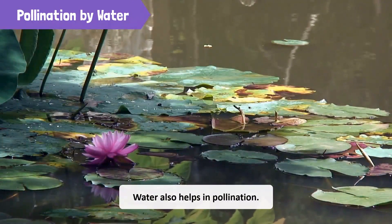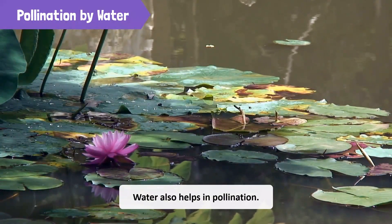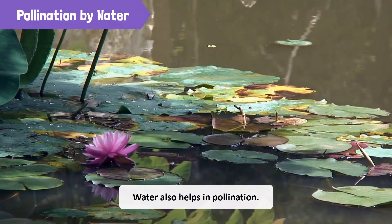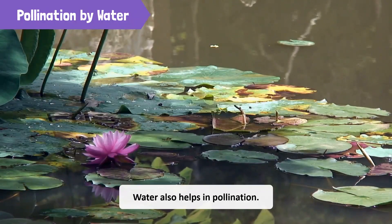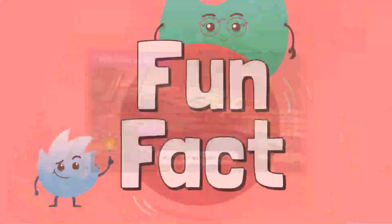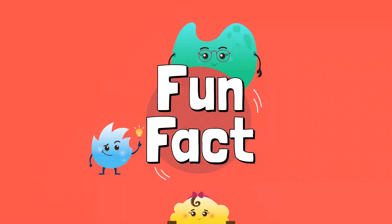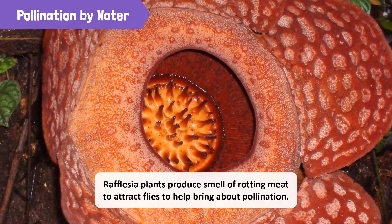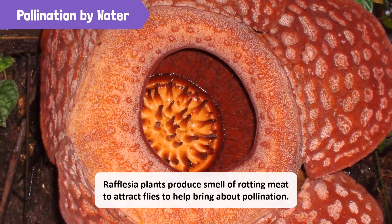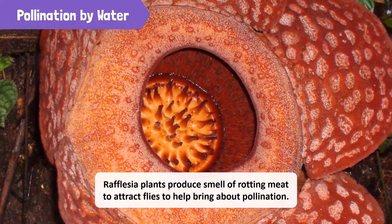Water also helps in pollination. Pollen grains can be carried by water currents to other aquatic plants. Most water lilies and lotus are pollinated by water. Did you know some flowers, such as the rafflesia plant, produce the smell of rotting meat to attract flies for pollination?